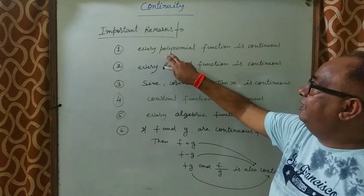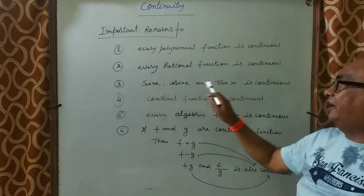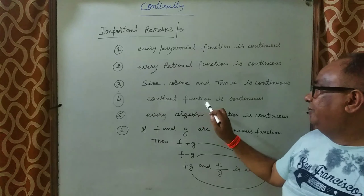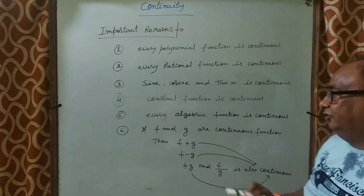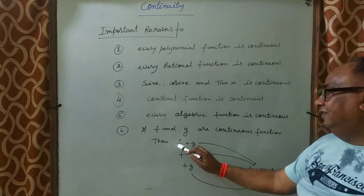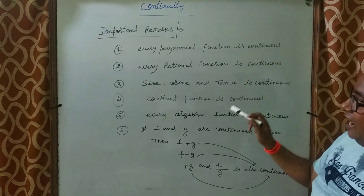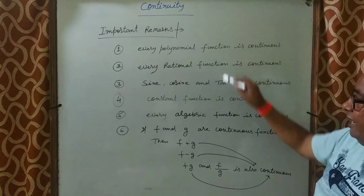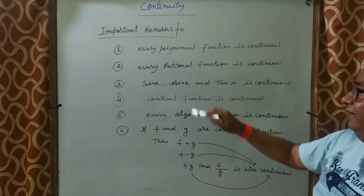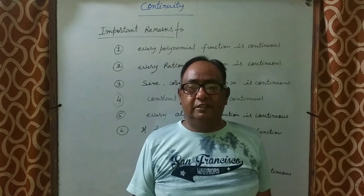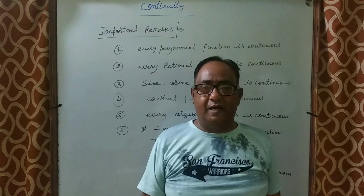In closing: every polynomial function is continuous. Every rational function is continuous. Trigonometric functions — sine, cosine, and tan — are continuous. Constant functions are always continuous, and algebraic functions are always continuous. If f and g are continuous, then their sum, difference, product, and quotient are also continuous. For upcoming theorems, we will directly apply these continuity properties. The questions covered today are very important — please practice them. Thank you.